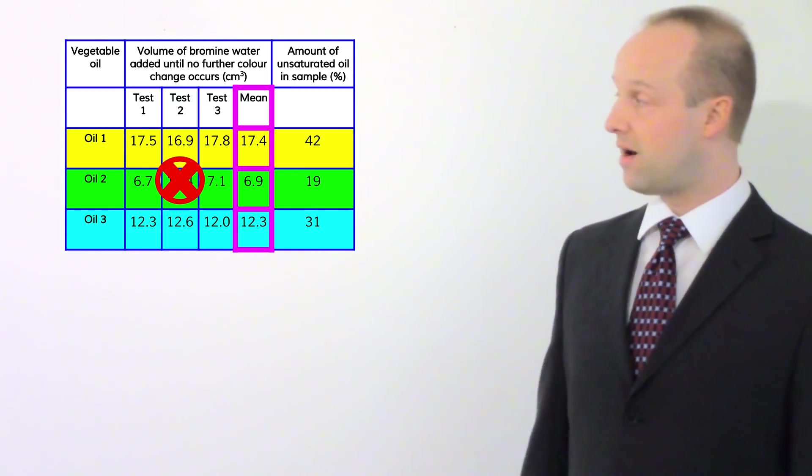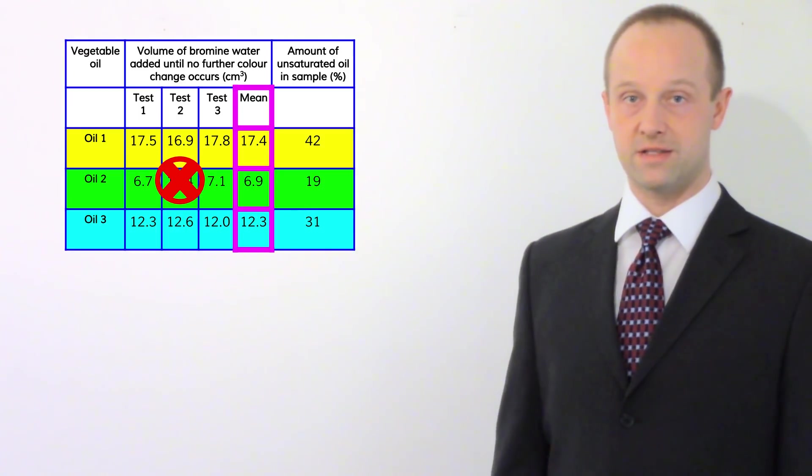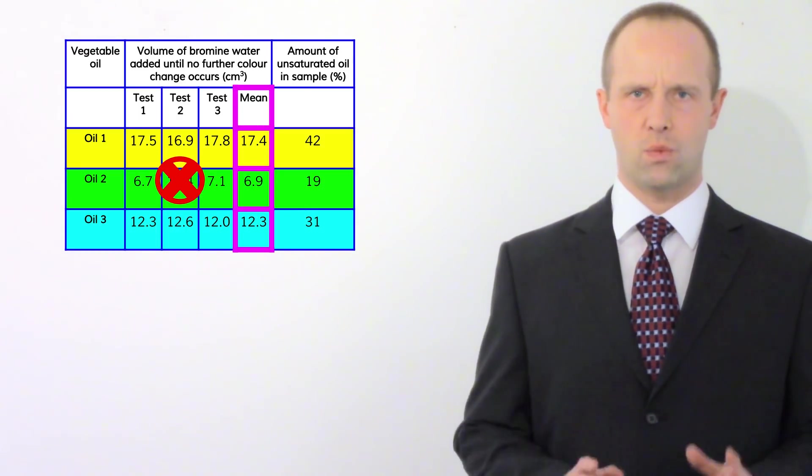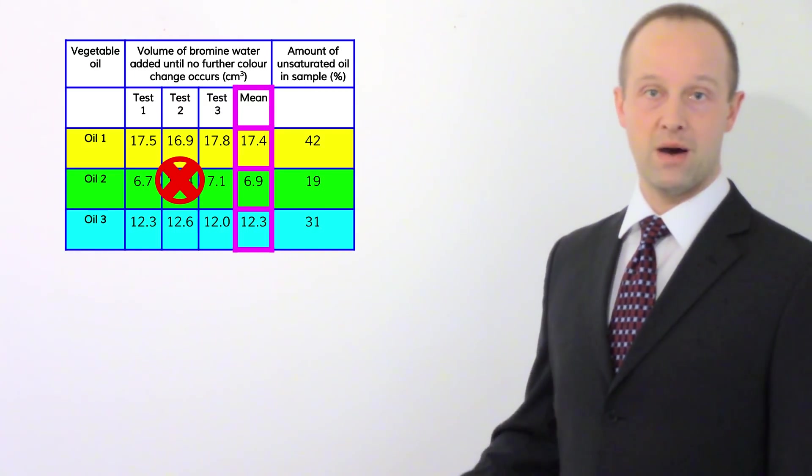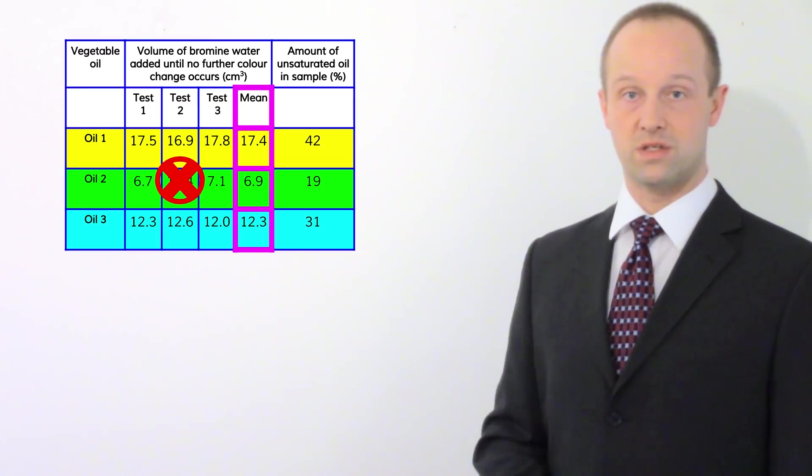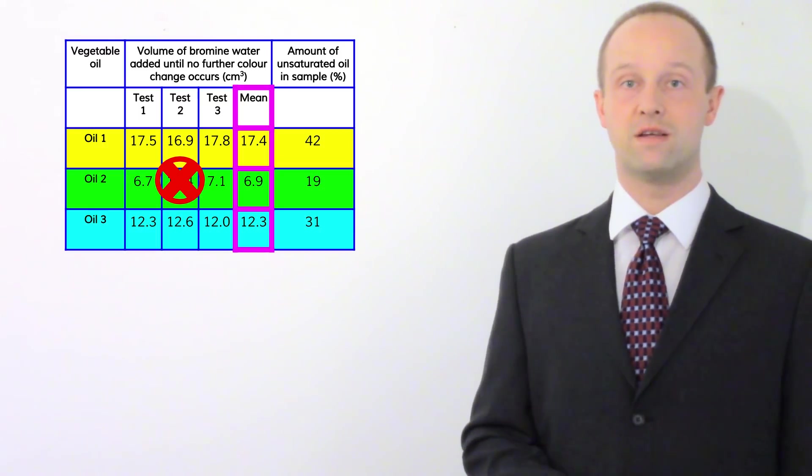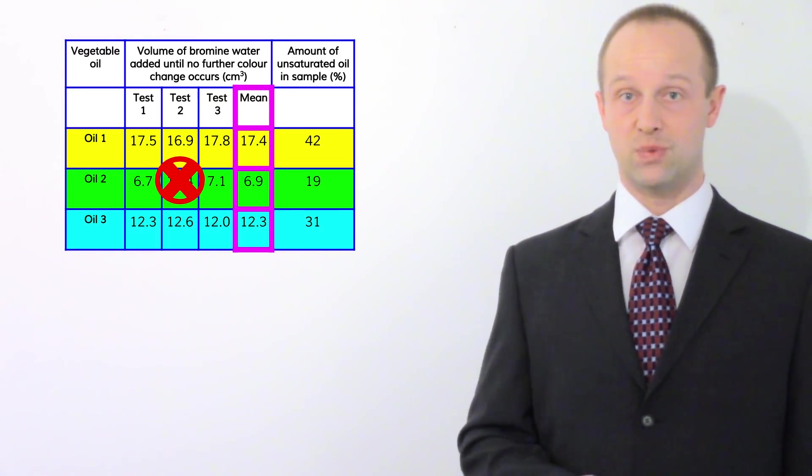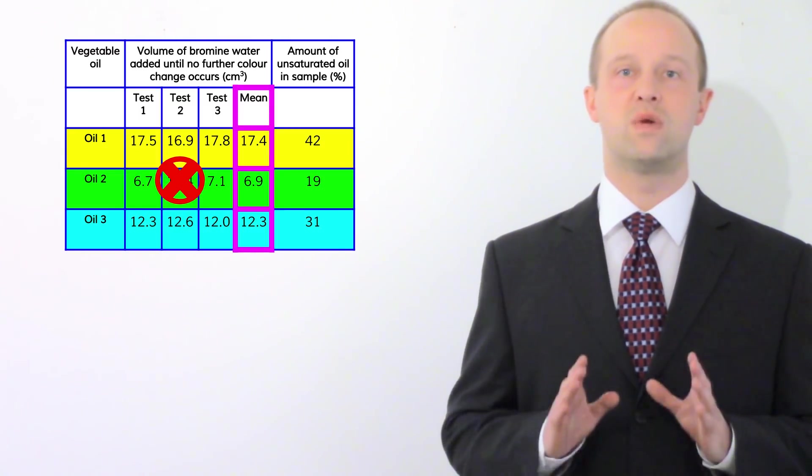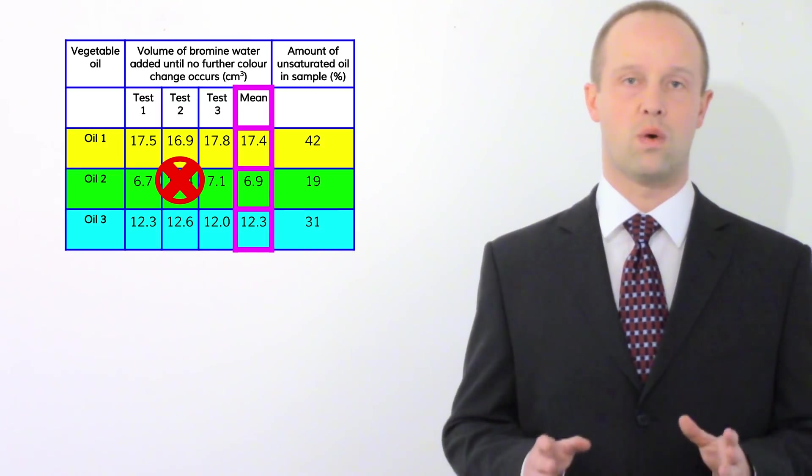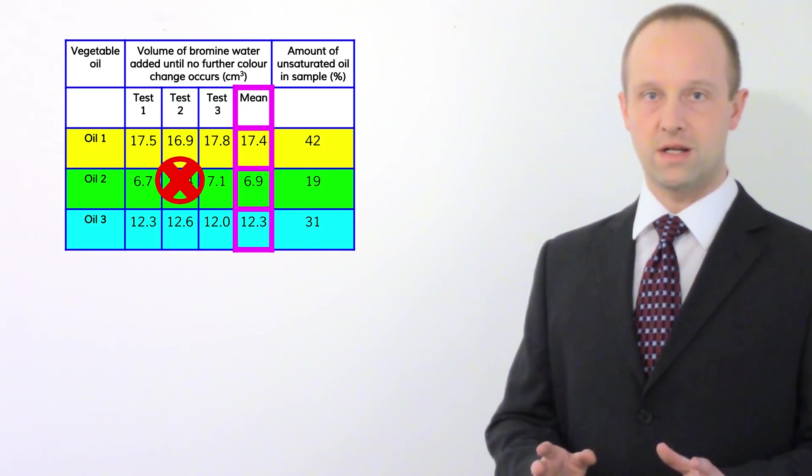So we've got our data, we've sorted out our means. What we need to do now is figure out what relationship this data shows us. And we don't really need to worry about all the raw data of tests one, two and three. All we need to focus on are these means which we've now calculated. The whole point of calculating the mean is to reduce the risk of anomalies swaying the results one way or another. And we've done that, it's already been done for us in fact.